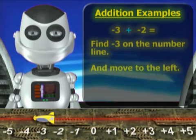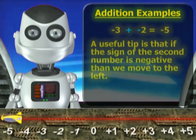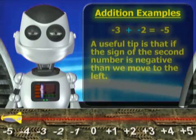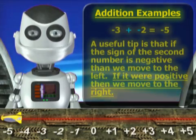Find negative three on the number line and move to the left. A useful tip is if the sign of the second number is negative, then we move to the left. If it were positive, we would move to the right.